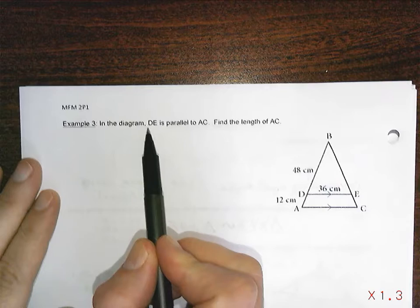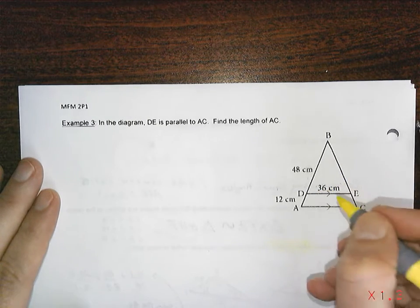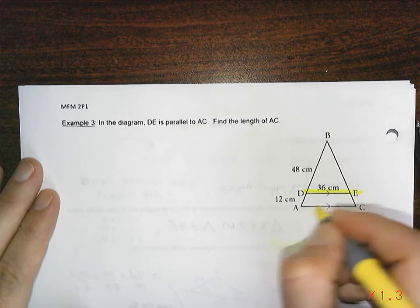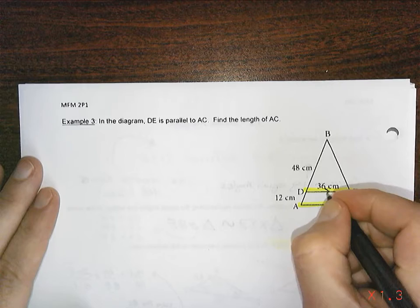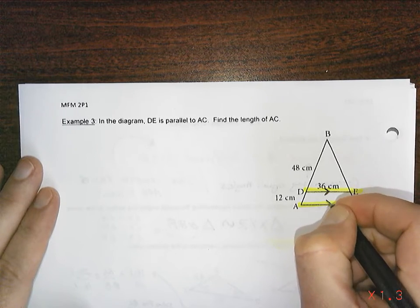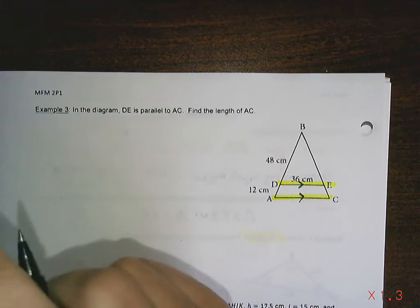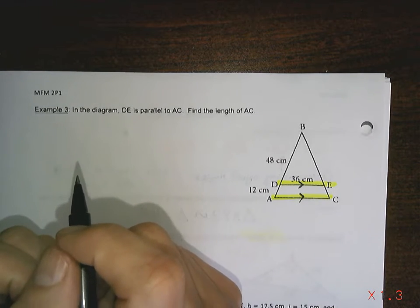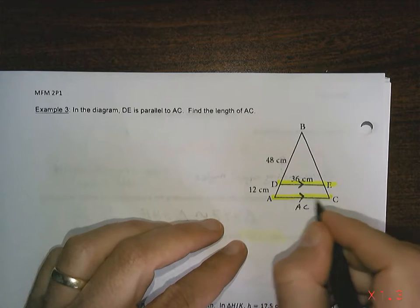In the diagram DE is parallel to AC. So this line is parallel to this line. What that means is we put these funny looking arrows on them which means that they are parallel, and the question is asking us to find the length of AC which is here. This is the length AC.